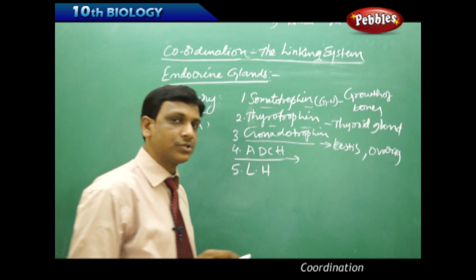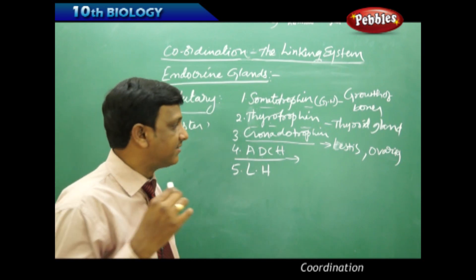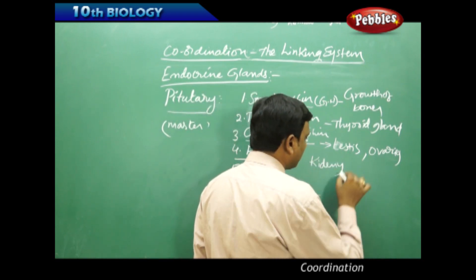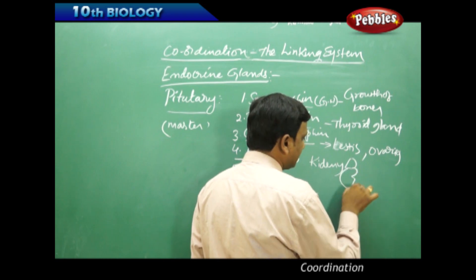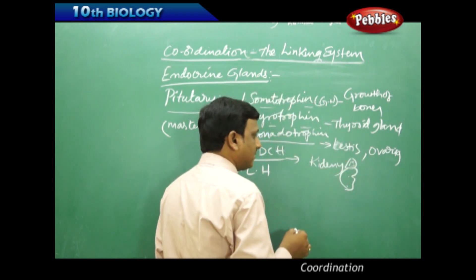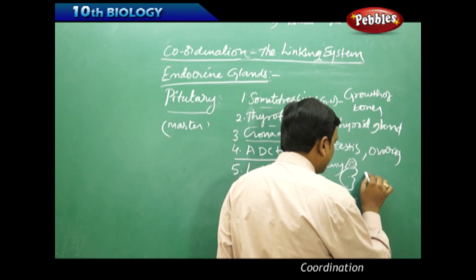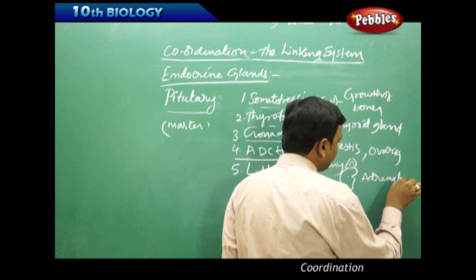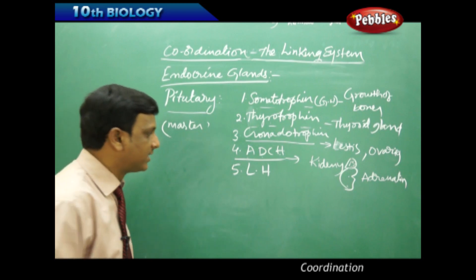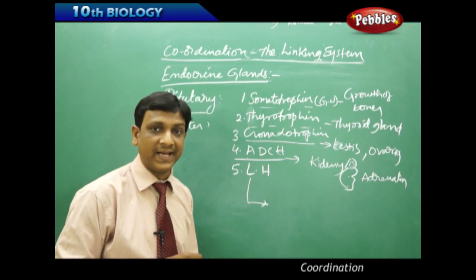Next is ACTH, the adrenocorticotropic hormone, which stimulates the production of adrenaline in the adrenal cortex. Above the kidney, there is an adrenal gland — on the top of the kidney. The adrenal gland has an adrenal cortex and medulla, and the adrenal cortex secretes adrenaline. This adrenaline secretion is controlled and stimulated by ACTH.